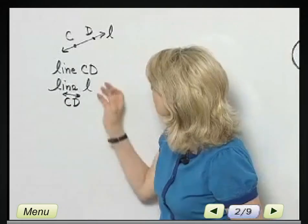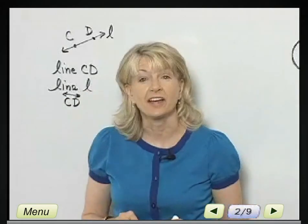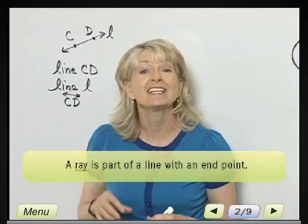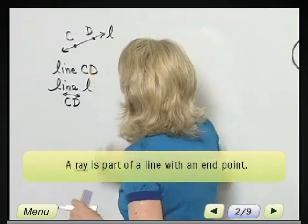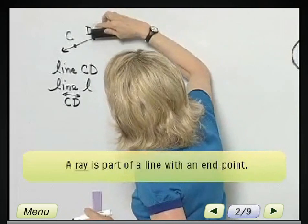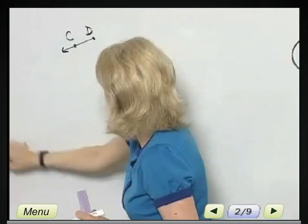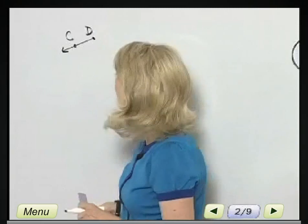Now let's talk about the difference between a line and a ray. A ray is basically part of a line with an endpoint. So the difference between a line and a ray is that a ray is part of a line.